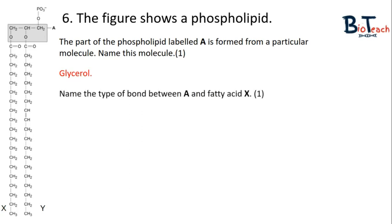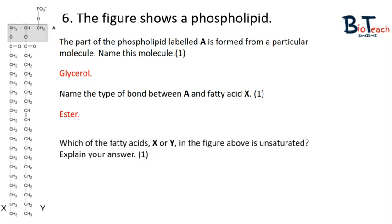The second part of the question for one mark asks you to name the type of bond between A and the fatty acid X. For one mark, you need to state that this bond is always going to be an ester bond. The third part of the question asks you to state which of the fatty acids X or Y in the figure is unsaturated. We know about unsaturated fatty acids having double bonds between some of their carbons. We look at the fatty acid X and we can see that all of these carbons have got single bonds between them. So it must be fatty acid Y that is the unsaturated fatty acid and we can see that double bond there.